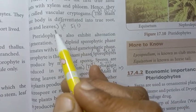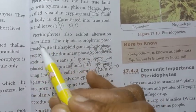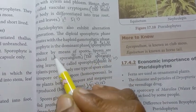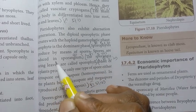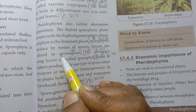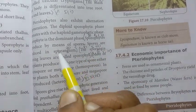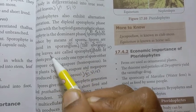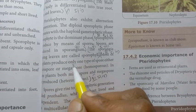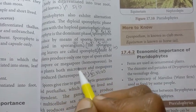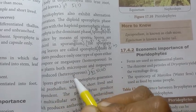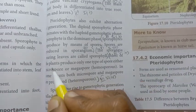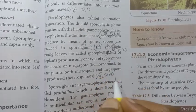Fifth question: Write any four characters of Pteridophytes. Page 197. First: the main plant body is differentiated into true root, stem, and leaves. Second: sporophytes reproduce by means of spores produced in sporangia; sporangia-bearing leaves are called sporophylls. Most plants produce one type of spore — either microspore or megaspore; in some plants both are produced, called heterospores.